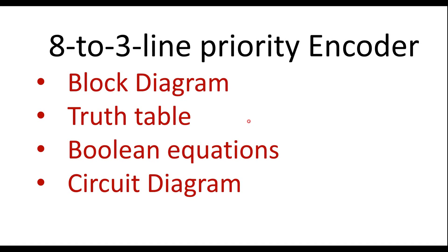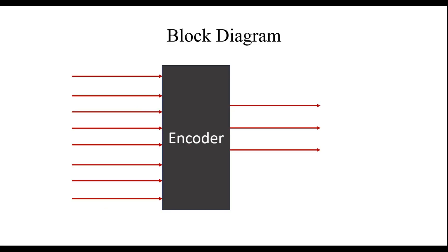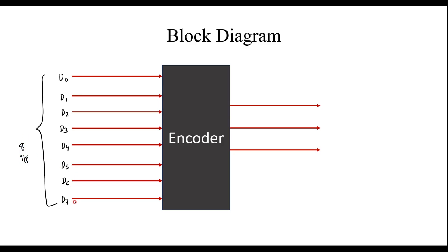In the 8-to-3 priority encoder, we have 8 inputs and 3 outputs. The 8 inputs are D0 to D7, where D7 is the MSB bit and D0 is the LSB bit. It has 3 outputs: Y0, Y1, and Y2, where Y2 is the MSB bit and Y0 is the LSB bit.